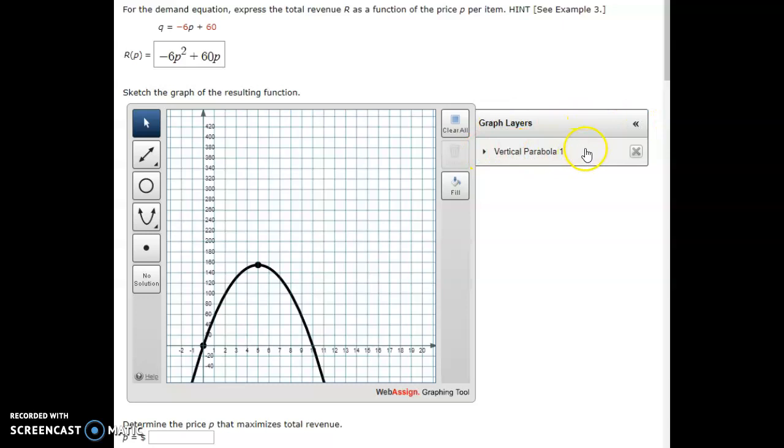And then you see this first thing right here, it's vertical parabola number one. So that's what I've only got one parabola. So that's why it's listed one. You can do multiple parabolas, and then it'll start listing all of them. So then I just click on the little arrow here.